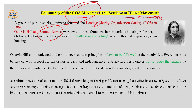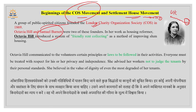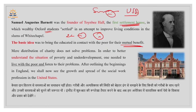We have discussed the COS movement and the Settlement House movement — the UK history of social work. In the next video we will discuss how social work emerged in the USA, what laws and movements were introduced there to change society. Please watch this video carefully and if you have any doubts, mention them in the Telegram group. Thank you so much.